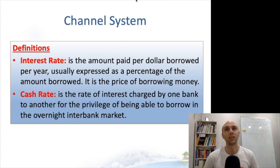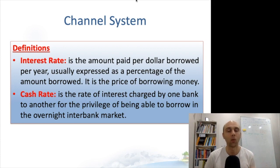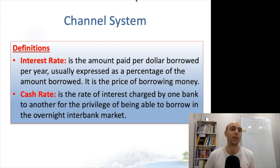So some definitions: the interest rate is the amount paid per dollar borrowed per year, usually expressed as a percentage. The way to think about it here is that it's the price of borrowing money — in a way, an interest rate serves as an opportunity cost of holding money. The cash rate is a particular type of interest rate: the interest charged by one bank to another for the privilege of borrowing in this overnight interbank market.